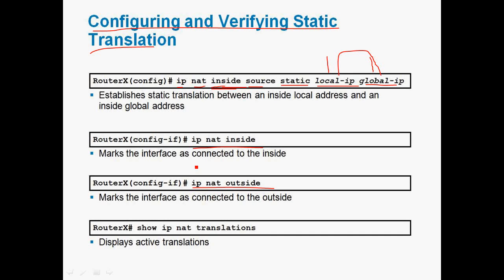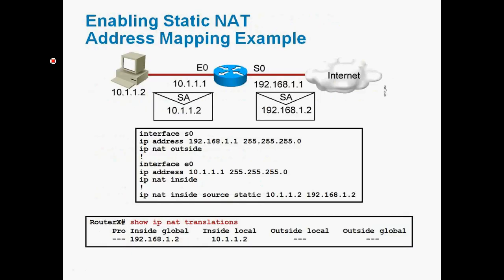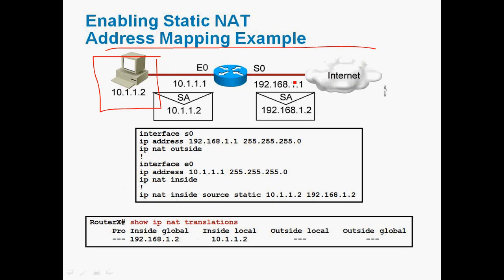To confirm static NAT, we can check the configuration using 'show IP NAT translation' — it will display the active translations. In this diagram, it will clearly explain static NAT. This is a local area network with a private IP address, and this is a global network where we use the private range 10.1.1.2.